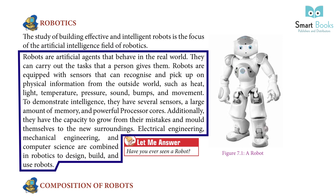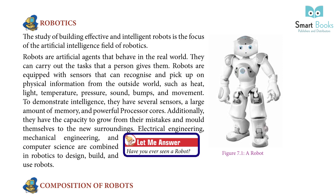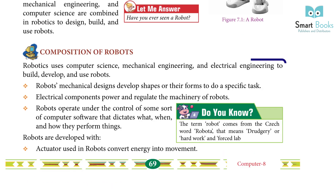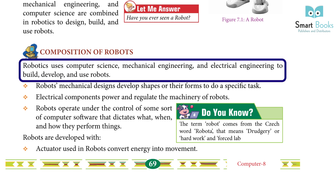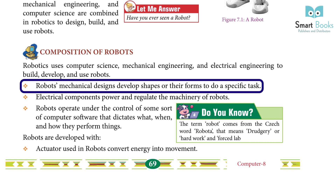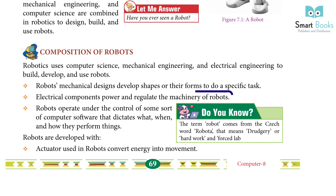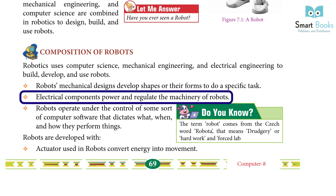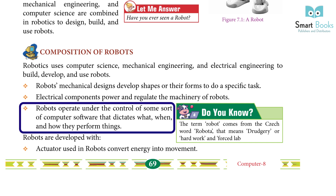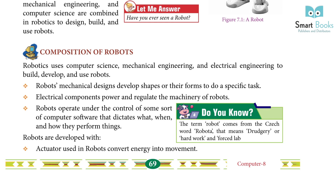Electrical engineering, mechanical engineering, and computer science are combined in robotics to design, build, and use robots. Composition of robots: Robotics uses computer science, mechanical engineering, and electrical engineering to build, develop, and use robots. The mechanical design develops shapes or forms to do a specific task. Electrical components power and regulate the machinery of robots. Robotics operates under the control of computer software that dictates what, when, and how they perform things.